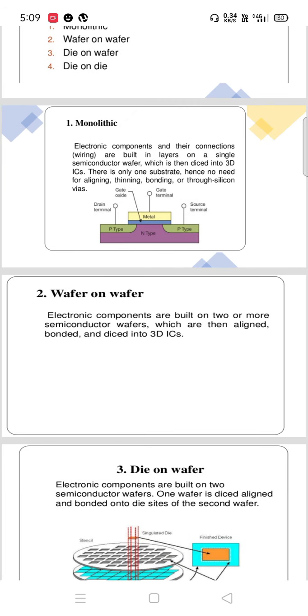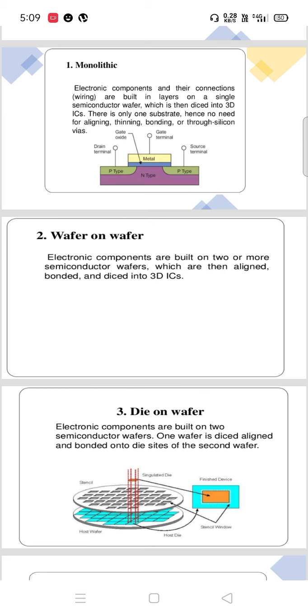Second method is wafer on wafer. Electronic components are built on two or more semiconductor wafers, which are then aligned, bonded, and diced into 3D ICs.